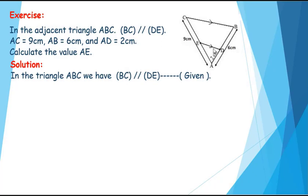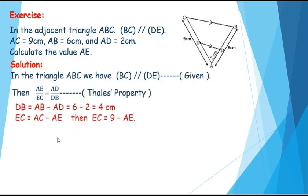Since BC is parallel to DE, then we can apply the third property. So we can say that AE over EC equals AD over DB. But DB equals AB minus AD, which equals 6 minus 2, equals 4 cm.